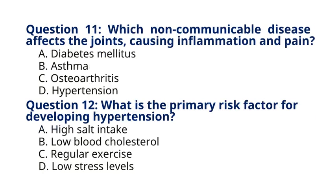Question 11: Which non-communicable disease affects the joints, causing inflammation and pain? A. Diabetes mellitus, B. Asthma, C. Osteoarthritis, D. Hypertension. The correct answer is option C, Osteoarthritis. Explanation: Osteoarthritis is a degenerative joint disease characterized by the breakdown of joint cartilage and underlying bone, leading to pain, stiffness, and impaired mobility.